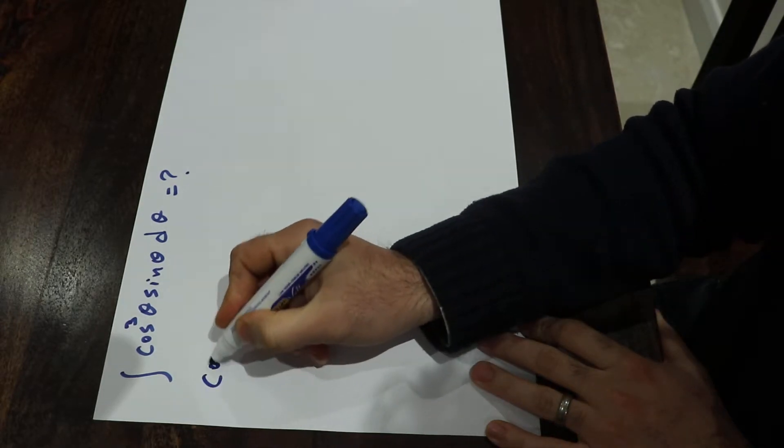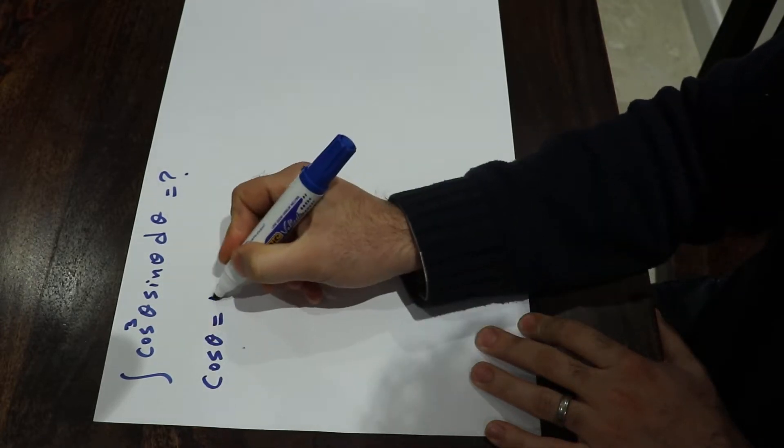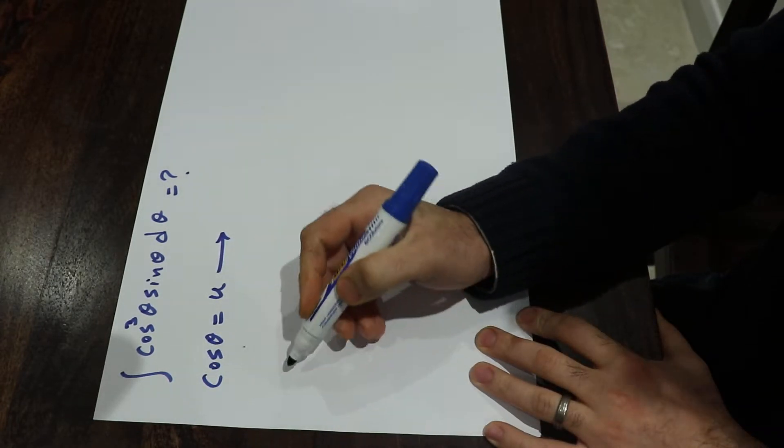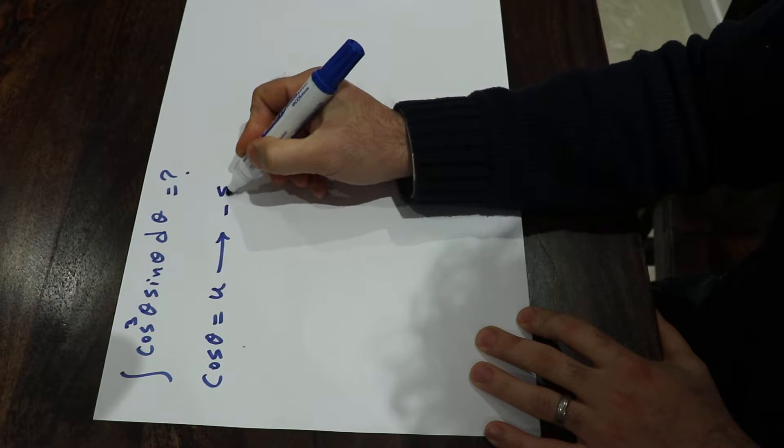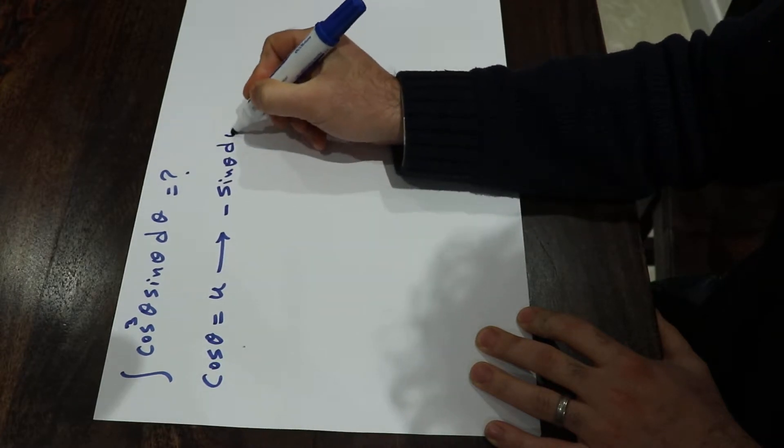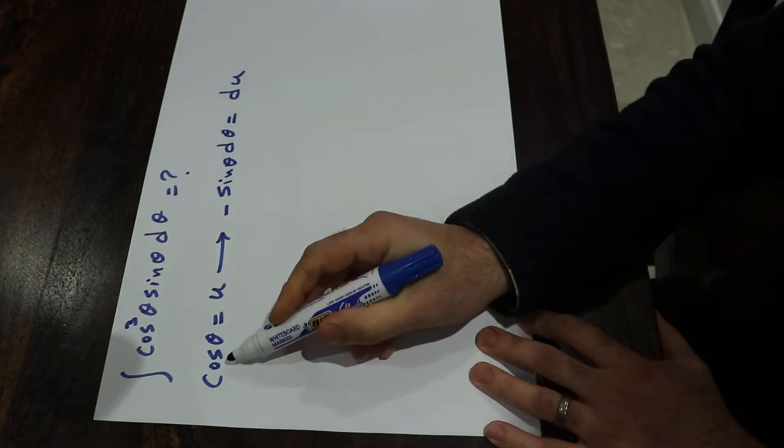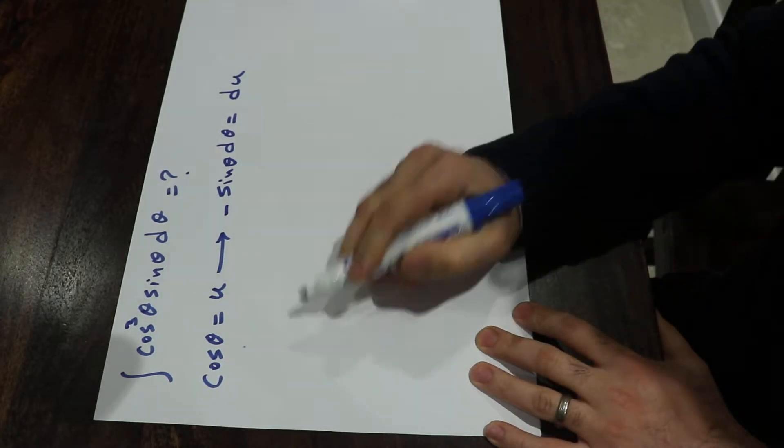So what you can do, you can define cosine theta as u. Therefore, if you take the derivative from each side of this equation, you get minus sine theta d theta equal to du. Remember the derivative of cosine theta is minus sine theta.